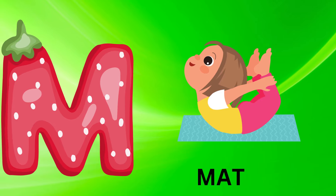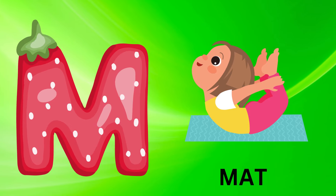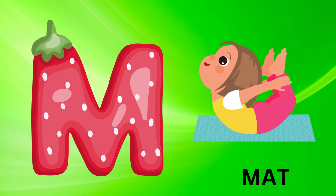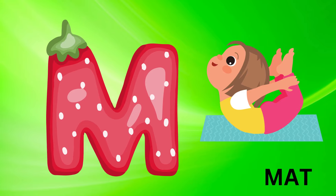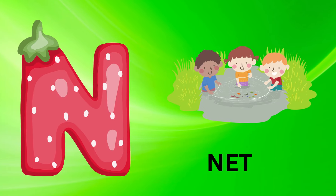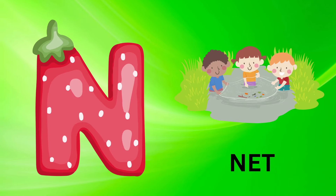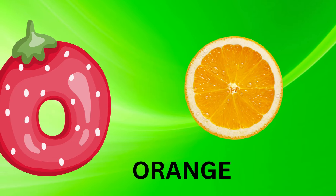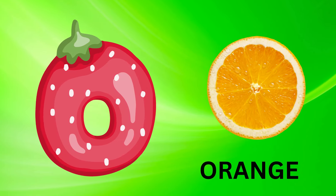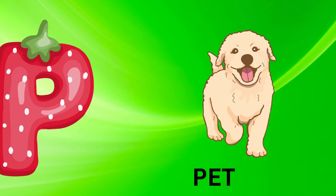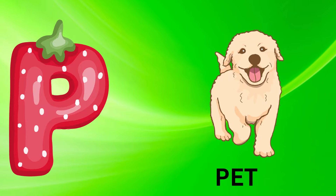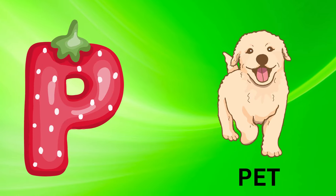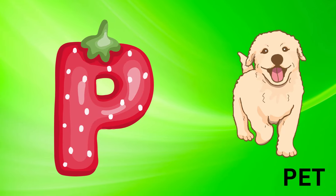M is for mat, m-m-mat. N is for net, n-n-net. O is for orange, o-o-orange. P is for pet, p-p-pet.